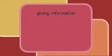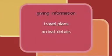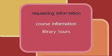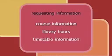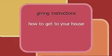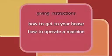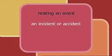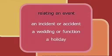Here are some examples. Letters for giving information might include travel plans, arrival details, what to see and do on holidays. Letters requesting information might be for course information, library hours, or timetable information. Some letters for giving instructions include how to get to your house, how to operate a machine, how to open an account, and relating an event such as an incident or accident, a wedding or function, or a holiday.